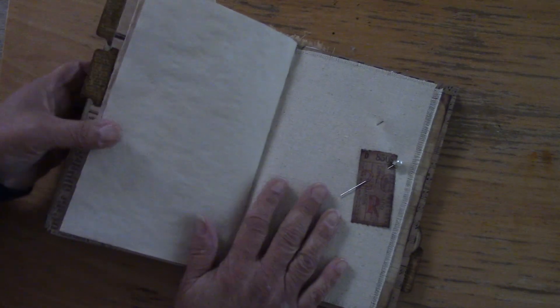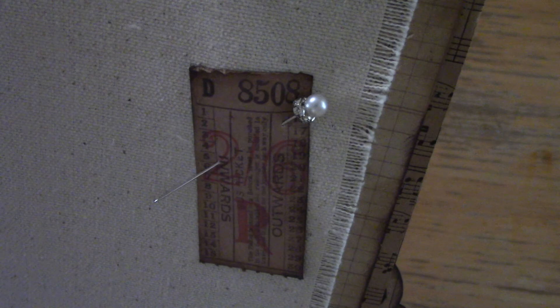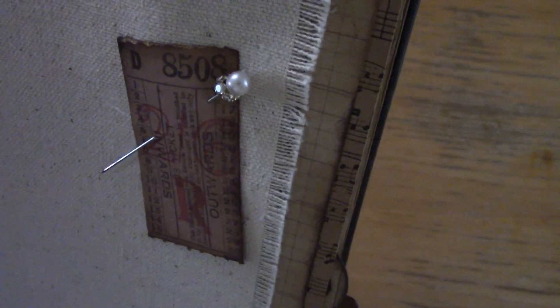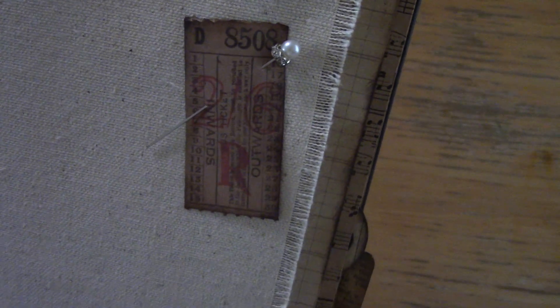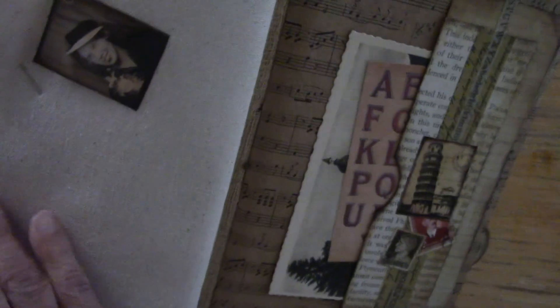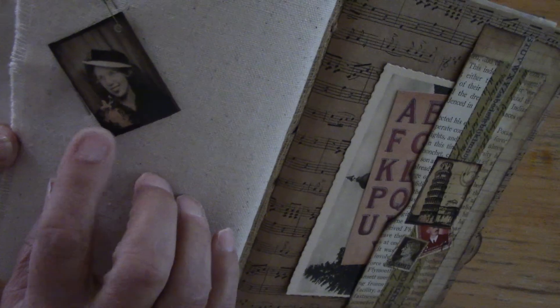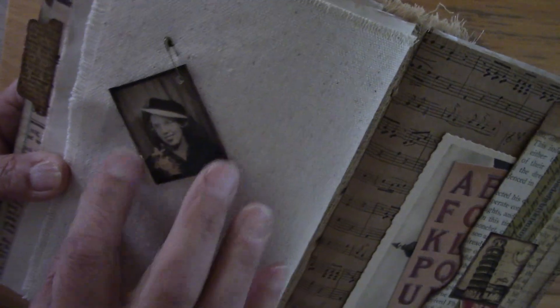And then on this side here is another example. This is like a boutonniere pin or a lapel pin. I just used that and used an old ticket right there to secure it. And then on this side we have another one of these photo booth photos.